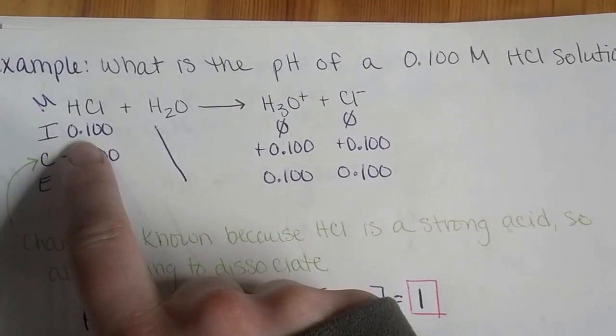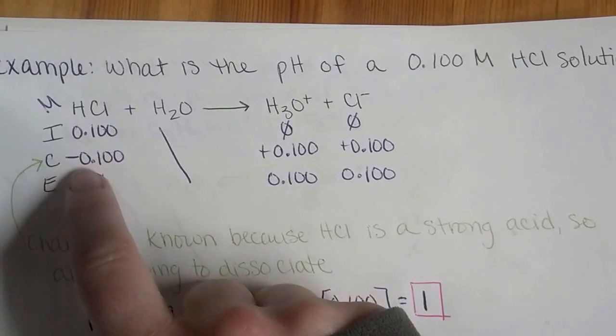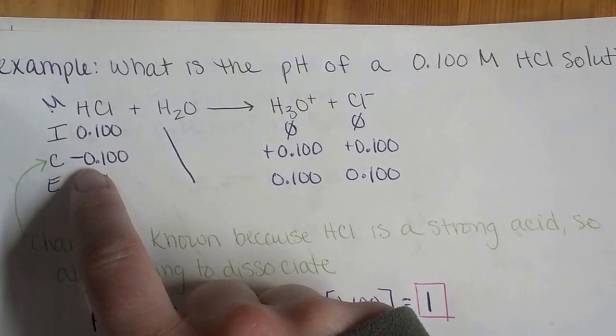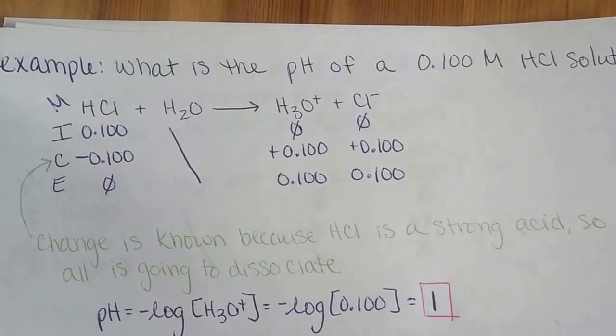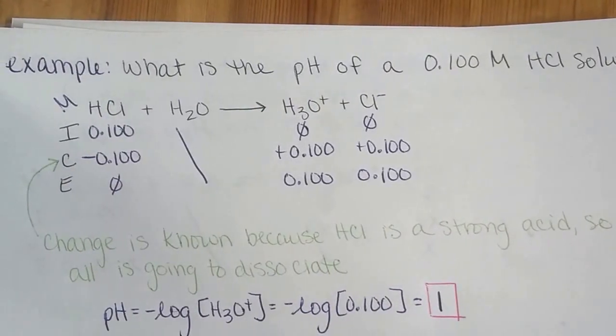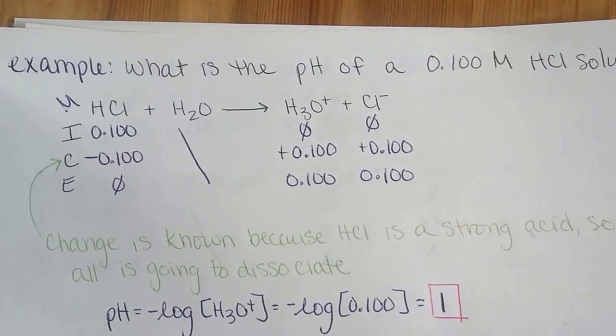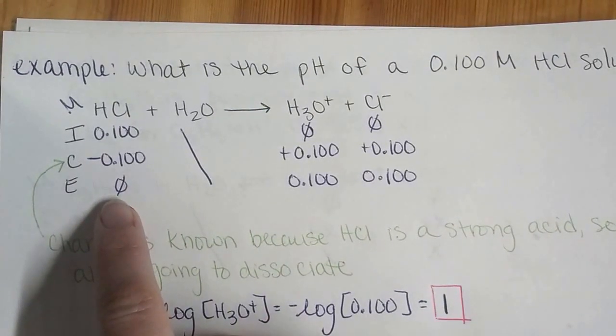We have 0.100 molar HCl. We know that all of that is going to react. We know our change in this case because HCl is a strong acid, so we end up with none of that in the end.